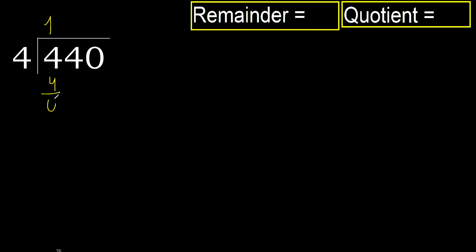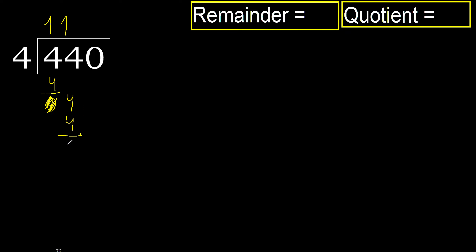Subtract, giving 0. Next, bring down the 0 on this side. 4 multiplied by 2 is 8 — 8 is greater. Multiply by 1 is 4, which is not greater. Subtract. Next, bring down the 0 on this side.